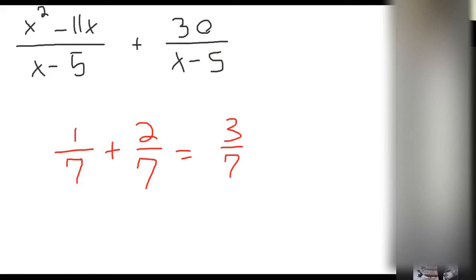But if you have something like 1 over 7 plus 2 over 5, you can't put those together. You'd have to get a common denominator of 35.